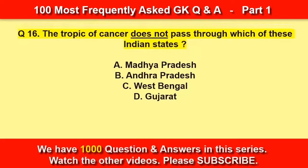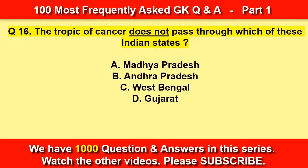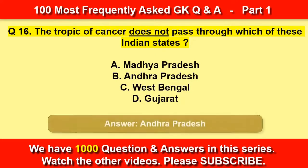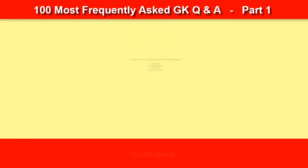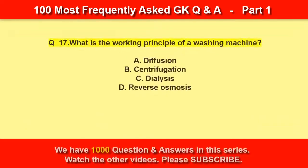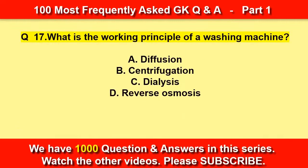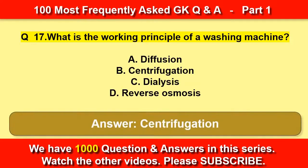The Tropic of Cancer does not pass through which of these Indian states? Andhra Pradesh. What is the working principle of a washing machine? Centrifugation.